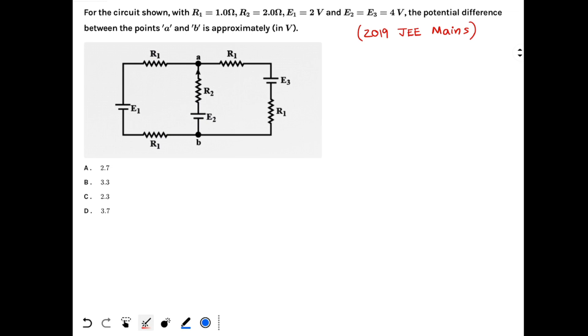Question for today - this is from 2019 JEE Mains. For the circuit shown with R1 equal to 1 ohm, R2 equal to 2 ohms, E1 equal to 2 volt, and E2 and E3 equal to 4 volt, the potential difference between the points A and B is approximately what?